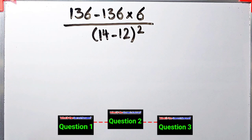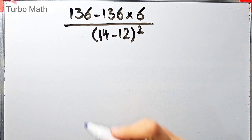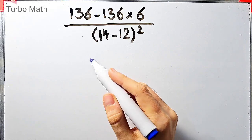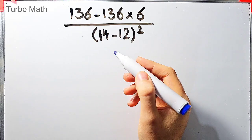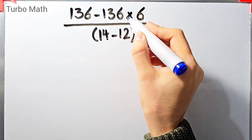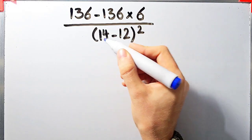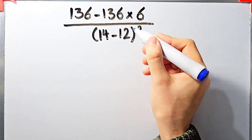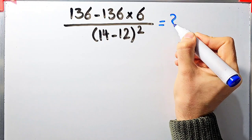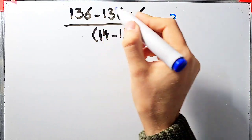Hi friends, welcome to Turbo Mass channel. In this video we are going to solve three questions about PEMDAS rule. In the first question we have: 136 minus 136 times 6, then over open parentheses 14 minus 12 close parentheses, then all of them to the power of 2. What is the answer of this question?